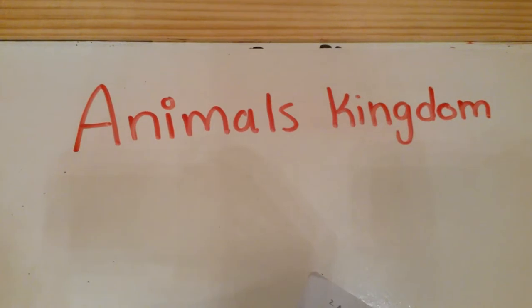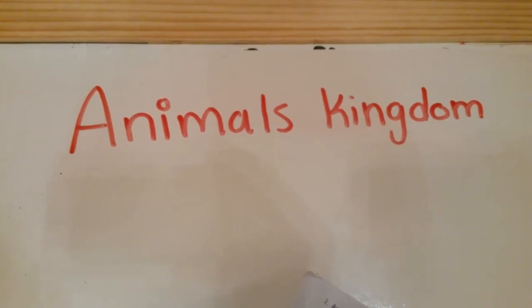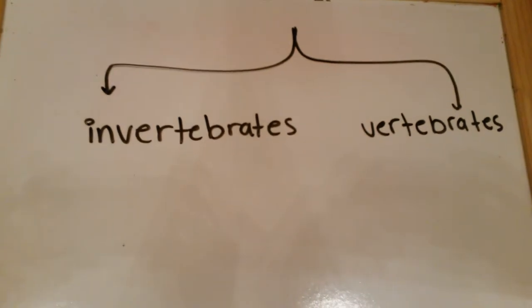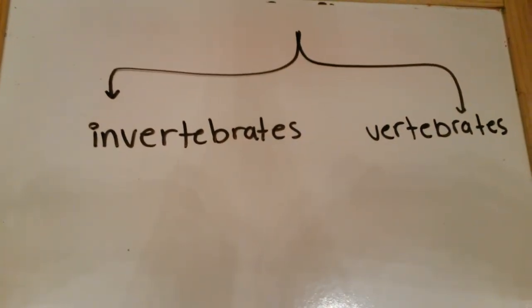The animal kingdom is made up of two main groups, invertebrate animals and vertebrate animals. But today I'm only going to talk about vertebrates.